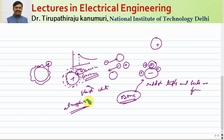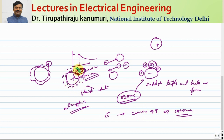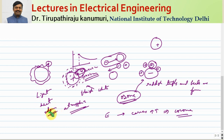Corona also depends on atmospheric conditions — in stormy or rainy weather, more charge carriers are already present in the air, so the corona effect is greater for a given electric field. The energy required to ionize the air and set these charges in motion comes from the supply, meaning some energy is lost in the corona phenomenon. This energy is dissipated in three forms: light, heat, and the characteristic ozone gas.